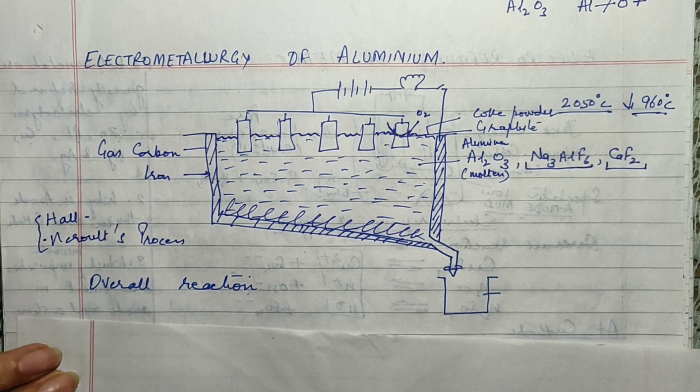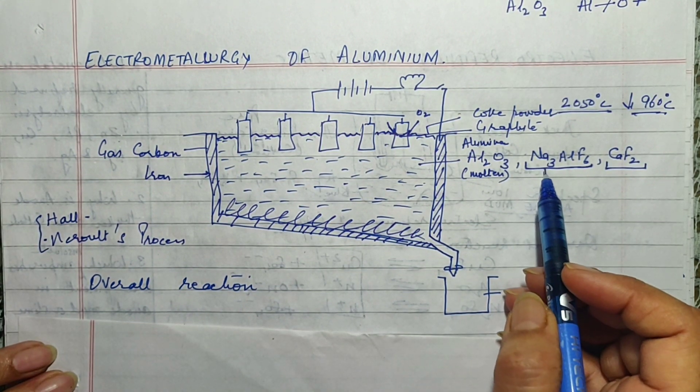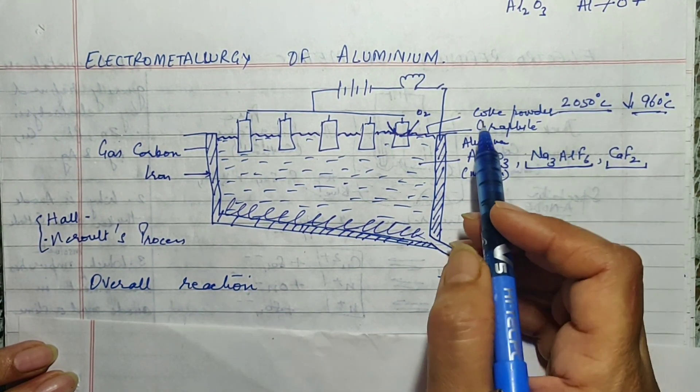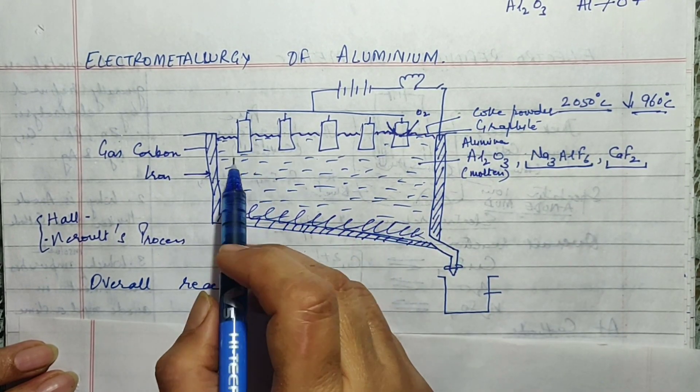So in order to prevent this the entire electrolytic mixture is covered over by the coke powder. So all of them can be asked as a reasoning question. Why do we add fluorospar, why do we add cryolite, why is coke powder sprinkled, another thing.